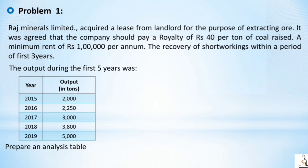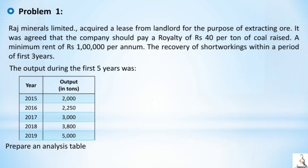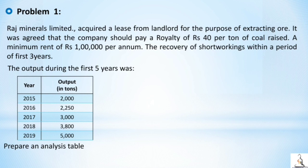The output during the first five years was: 2015 — 2000 units, 2016 — 2250 units, 2017 — 3000 units, 2018 — 3800 units, 2019 — 5000 units. They have asked us to prepare an analysis table. You could pause the video to go through the problem and understand the solution better.